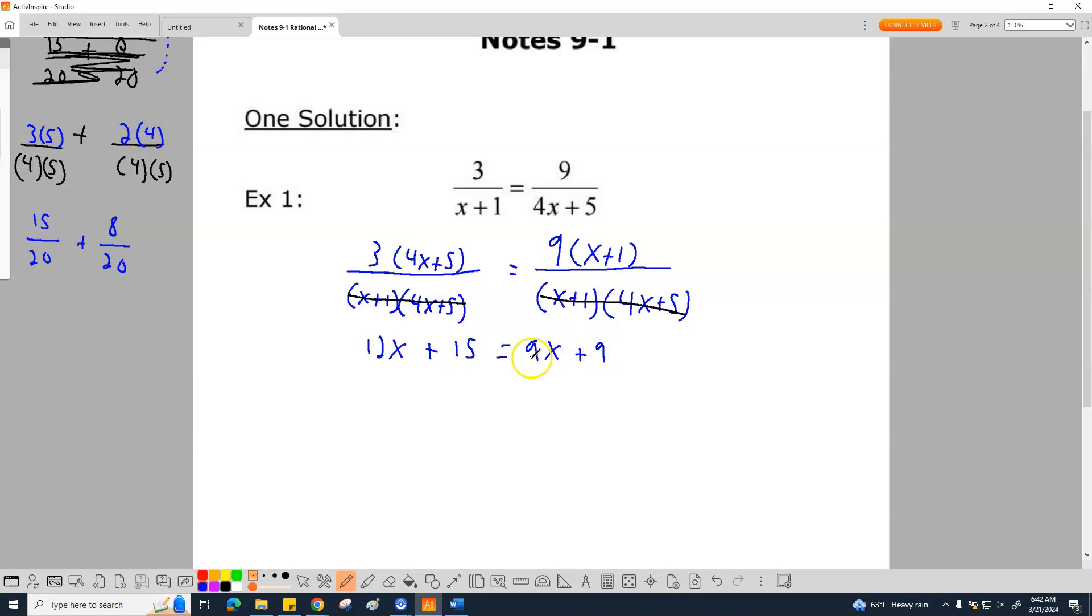And then, 9 times x is 9x plus 1 plus 9. And then, this is a normal equation. You've got to get your x's on one side. That gives you 3x plus 15 equals 9. I'm going to subtract my 15. That says plus 15. So, we do subtract. I end up with 3x equals negative 6.